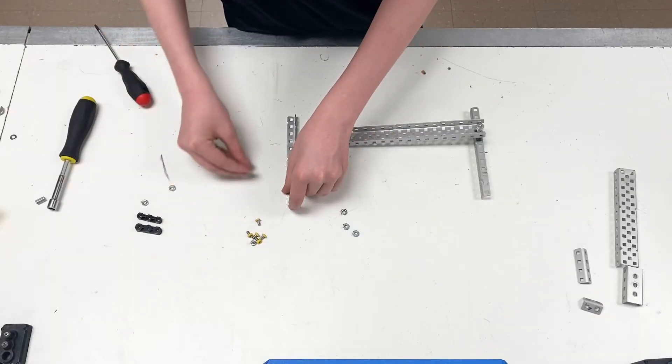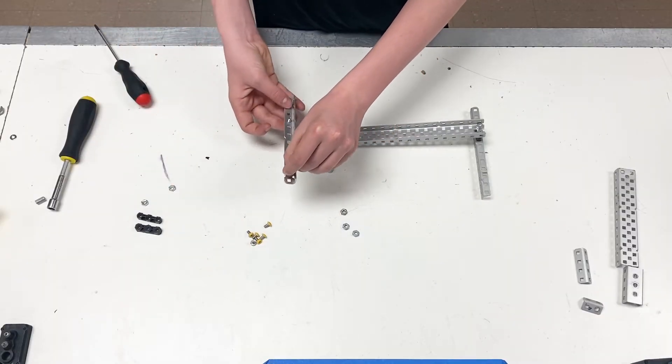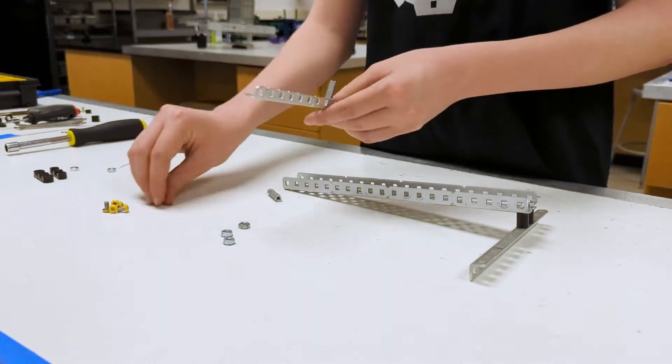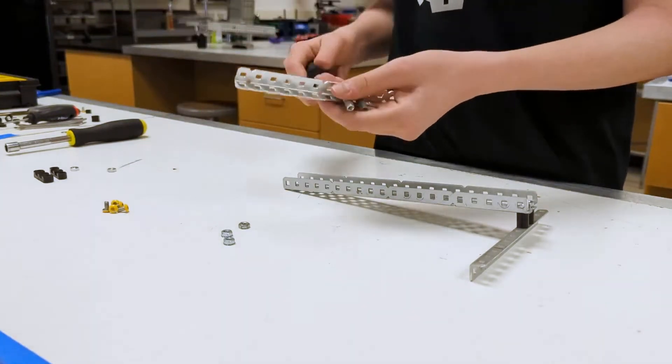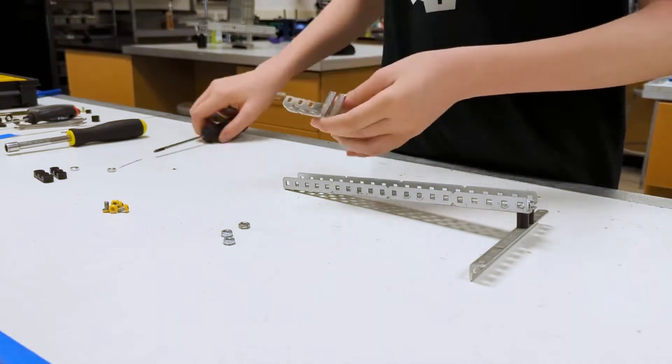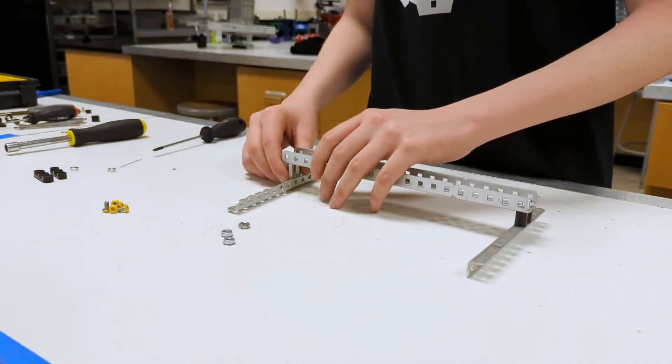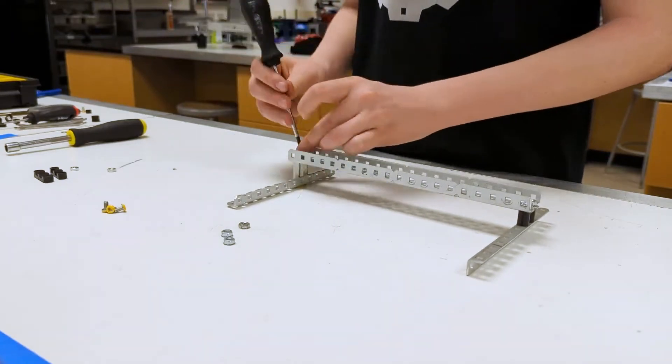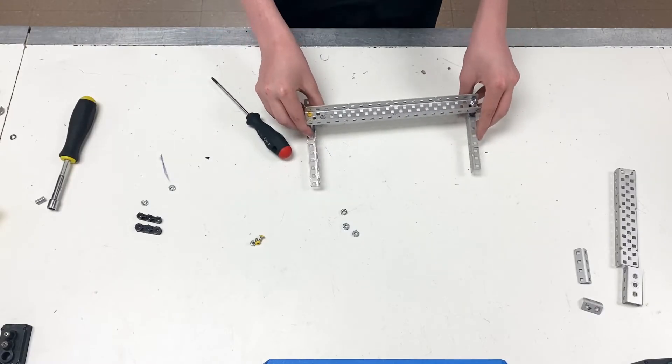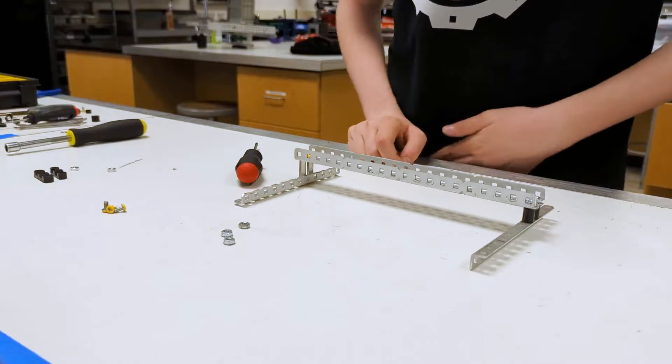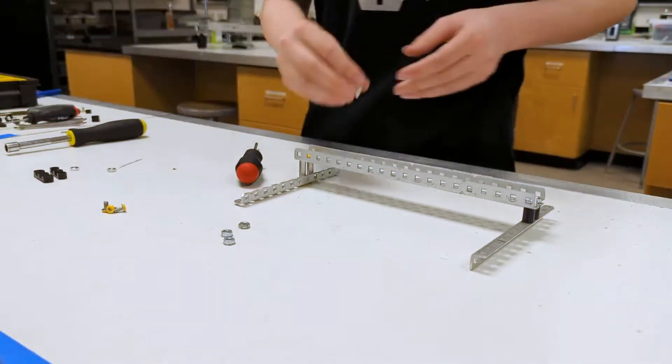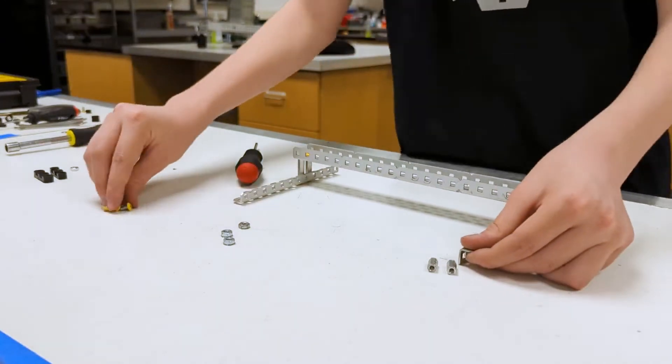All right, then we want to take and use standoffs for this one, three holes above. Once that happens, you can screw this on up top. Once again, keep these loose. All right, once you do this, you're going to get two more one-inch standoffs and you're going to screw those into the top two holes.